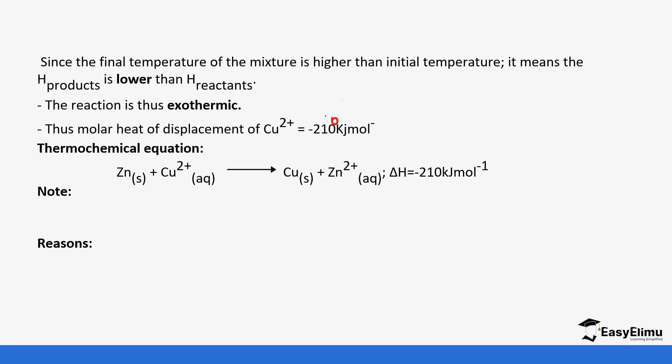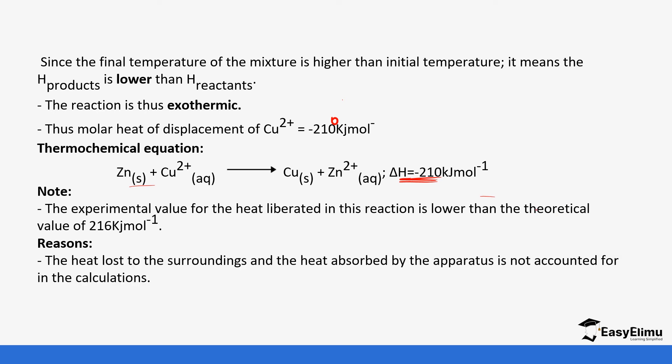And when you look at the thermochemical equation, as I said before, this is the balanced chemical equation with the heat change at the end. So the experimental value of the heat liberated is lower than the theoretical value because there is heat lost into the surroundings and the heat absorbed by apparatus is not accounted for. Remember we mentioned this in the previous video on the heat of combustion. So you can be asked to mention why there is that change.